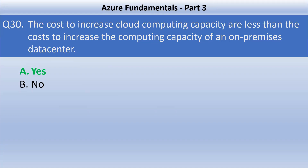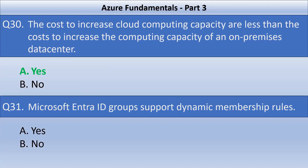Let's look at another statement: Microsoft Entra ID groups support dynamic membership rules. This is also a correct statement. You can create attribute-based rules to enable dynamic memberships for a group in Microsoft Entra ID. Dynamic group memberships adds and removes group members automatically using membership rules based on member attributes. When the attributes of a user or device change, the system evaluates all dynamic group rules to see if the change triggers any group additions or removals. If a user or device satisfies a rule, they are added as a member. If they no longer satisfy the rule, they are removed. You cannot manually add or remove a member of a dynamic group.